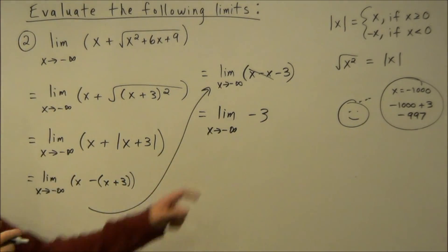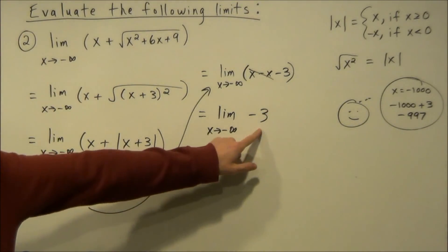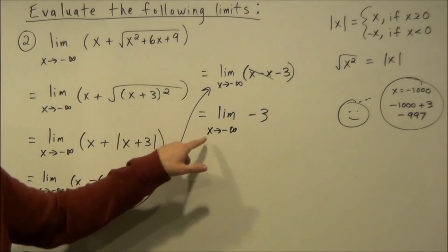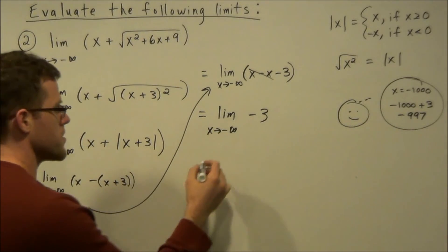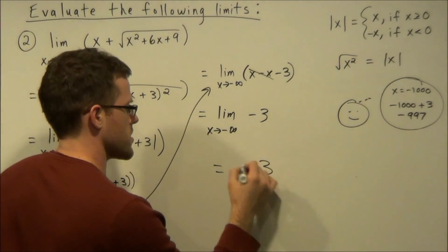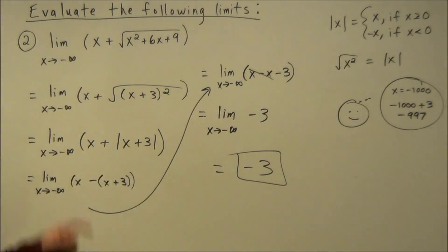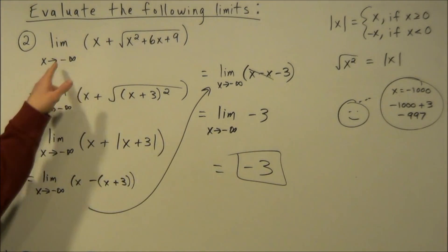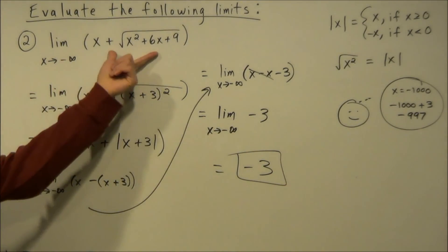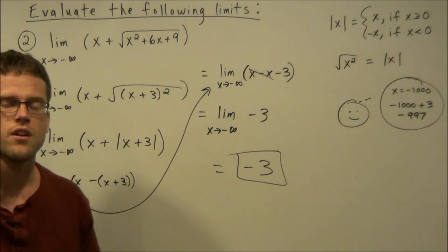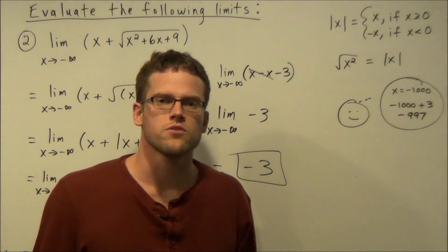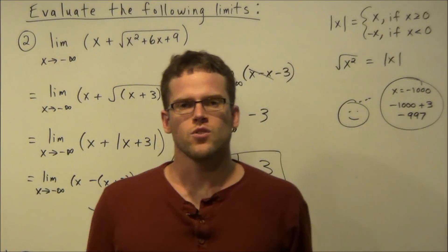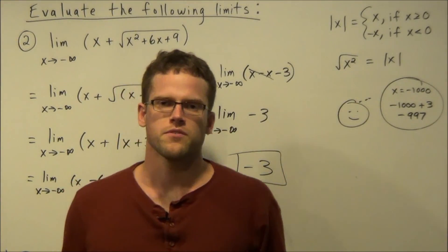The x minus x terms cancel, leaving the limit as x approaches negative infinity of negative 3. Since this is just a constant function, the limit of a constant as x approaches any value, infinity, or negative infinity is simply that constant. So our answer to the second example is negative 3. This concludes the video on evaluating limits with absolute value — thank you all for watching and I hope this was helpful.